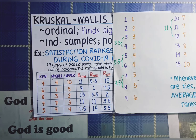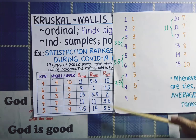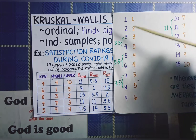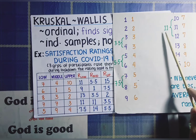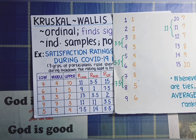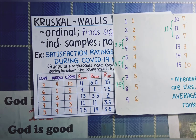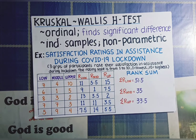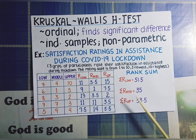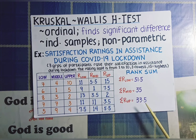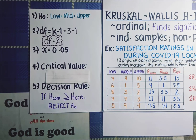Next, we add columns for ranks in lower class, middle class, and upper class, and plug in all the ranks determined earlier. For example, 7 in lower class has a rank of 11, while 4 in middle class has a rank of 5.5. Then we get the rank sum for each column. For lower class, that's 11 + 9 + 13 + 11 + 7.5 = 51.5. For middle class, that's 35. And for upper class, that's 33.5.